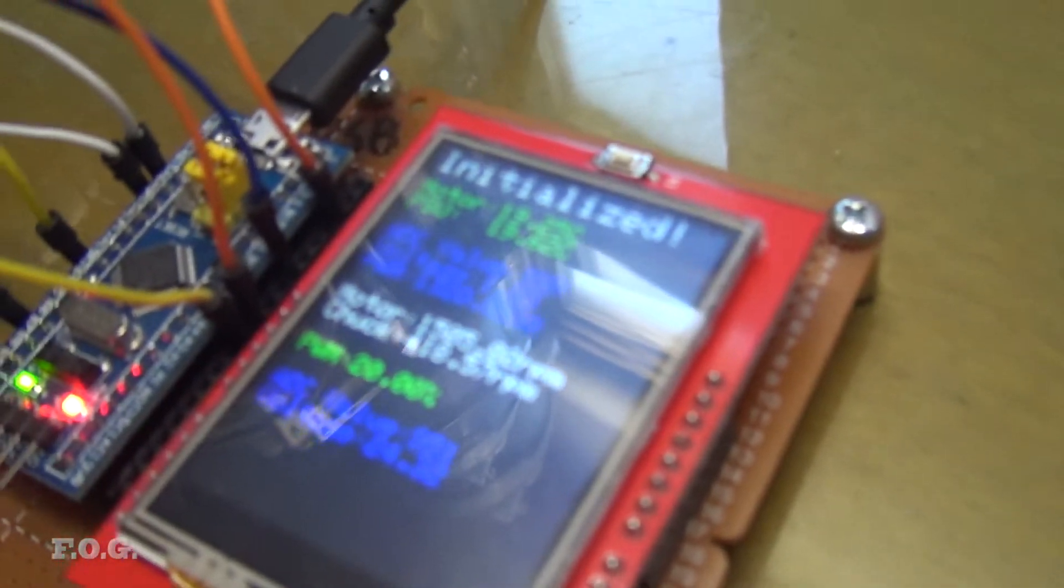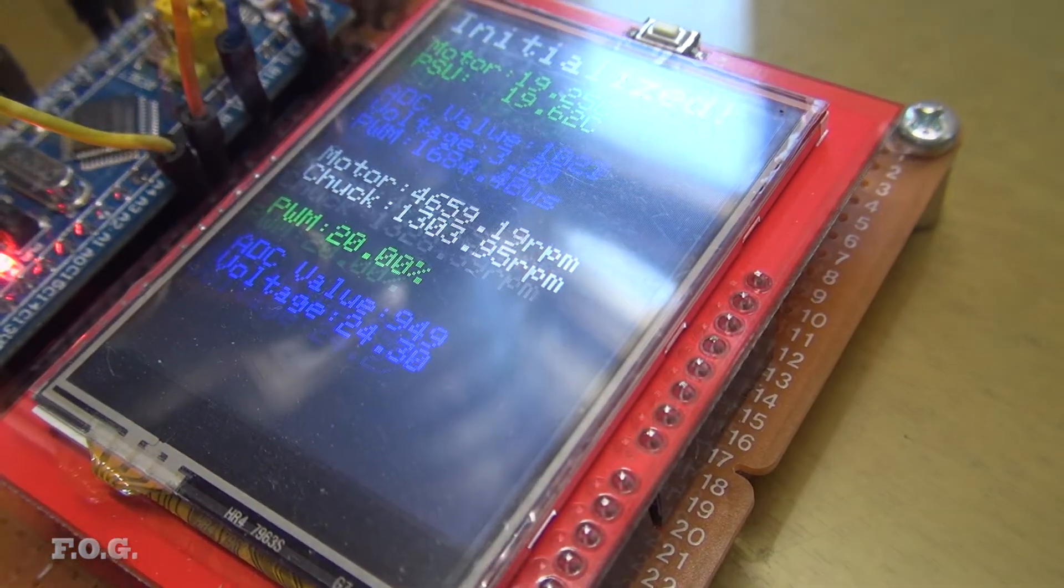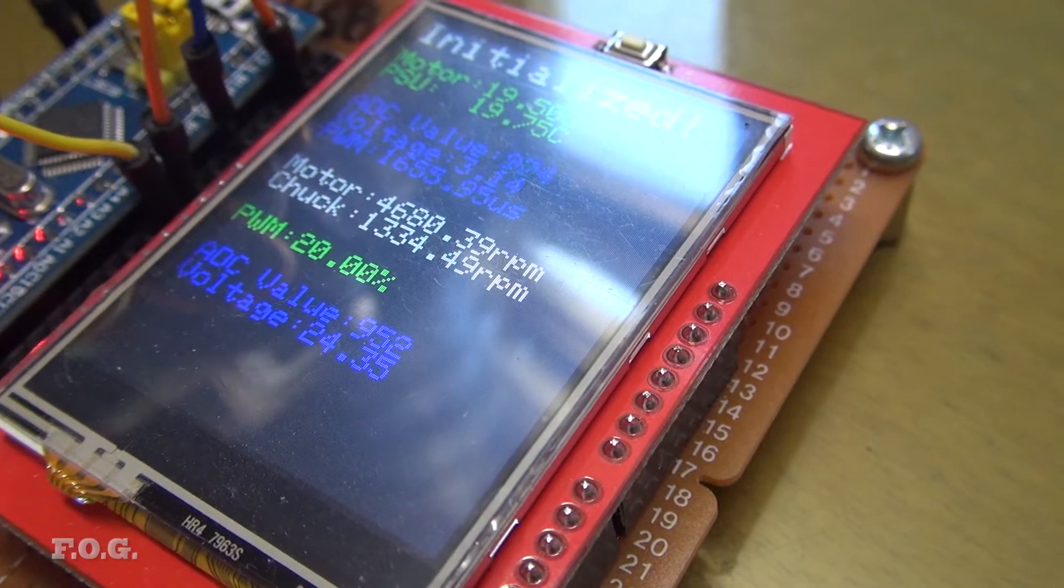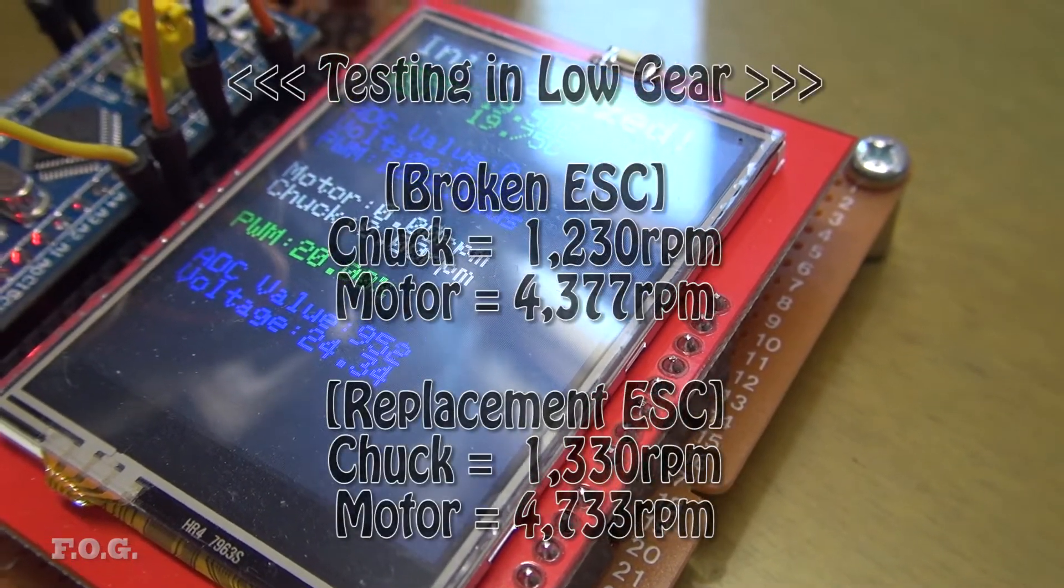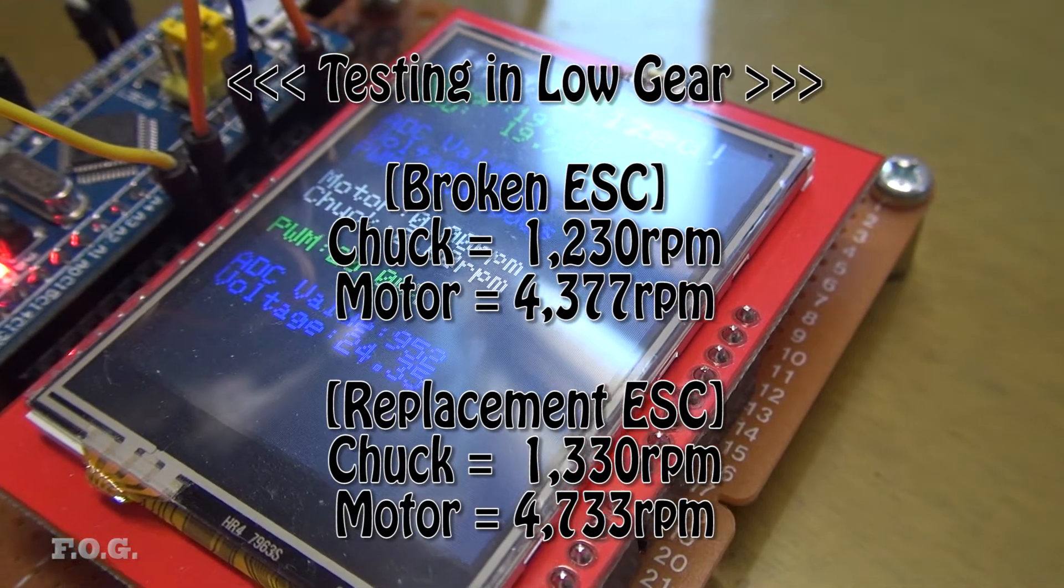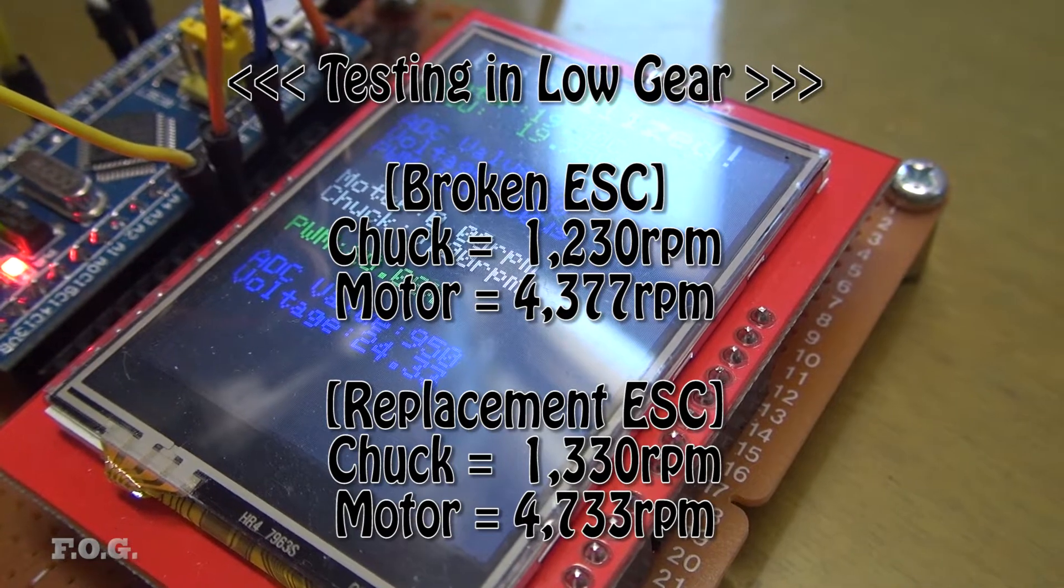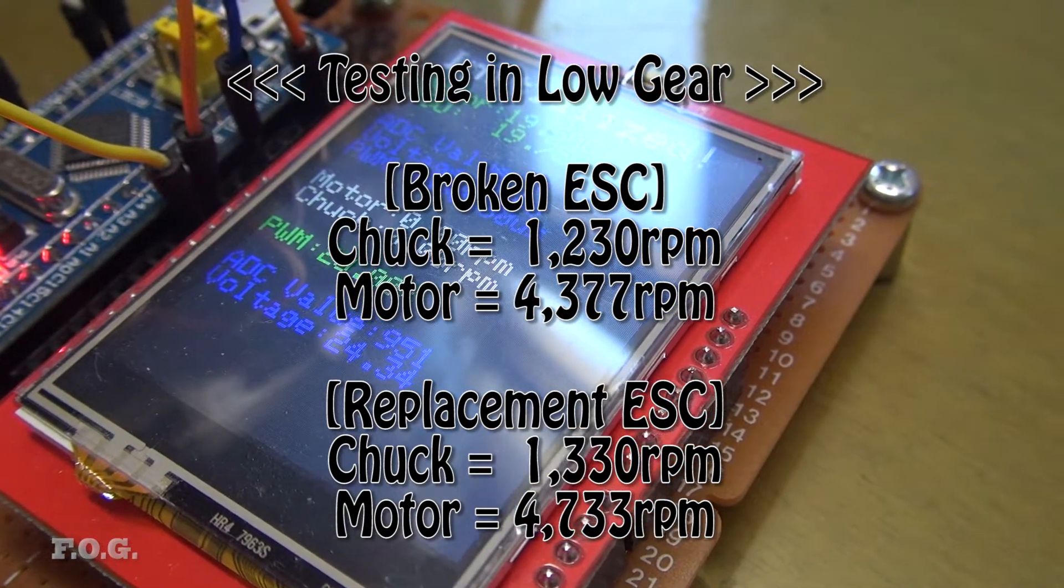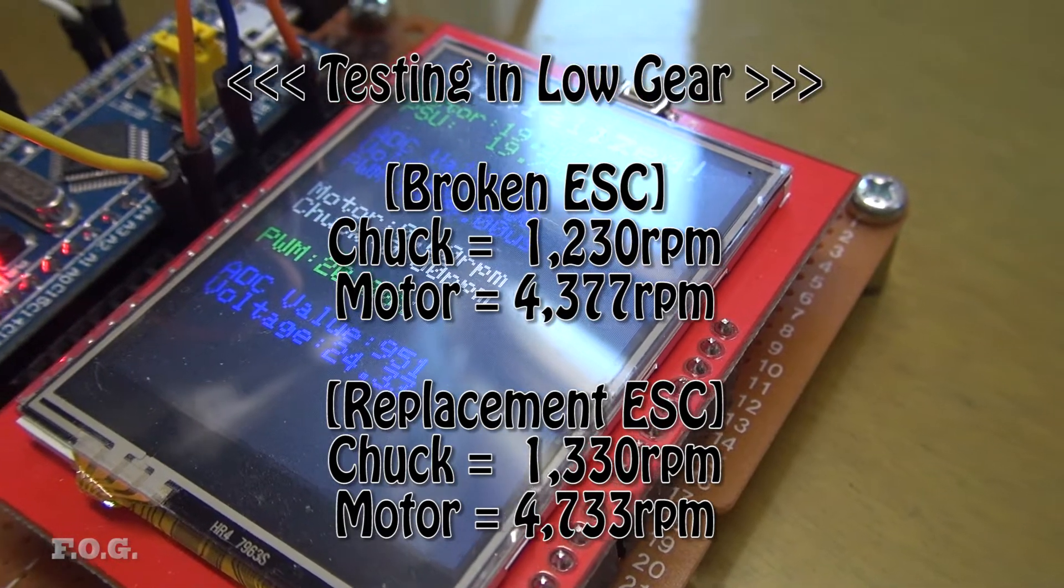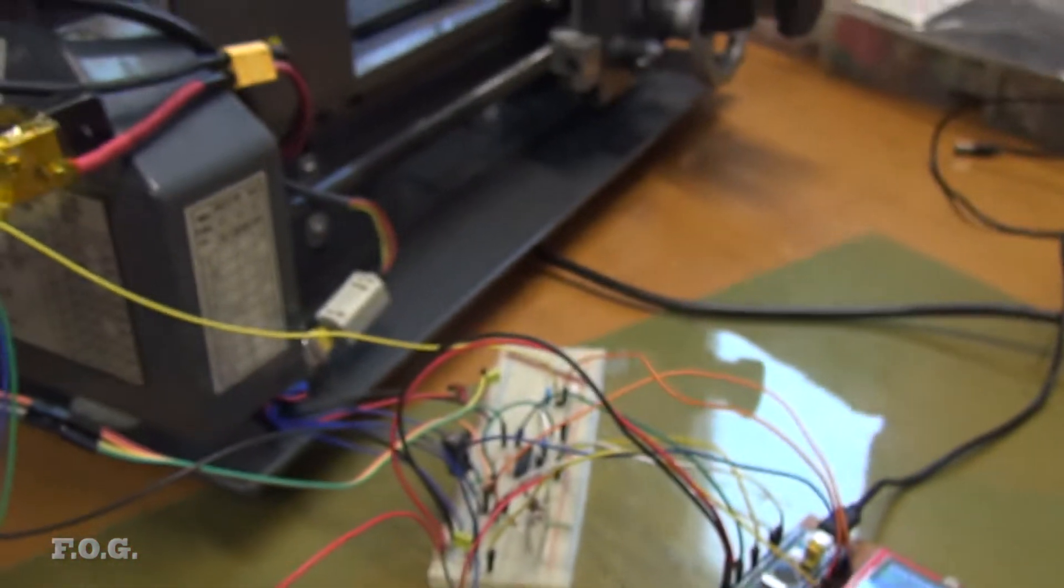And the second thing that's changed. So before I was getting a chuck speed of up to around about 1200 RPM in low gear, and now it's like 1330 or so. The motor was spinning around about 4200. Now it's spinning at 4800. So clearly an improvement there. That's a good result.